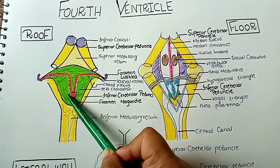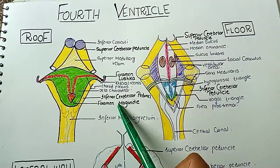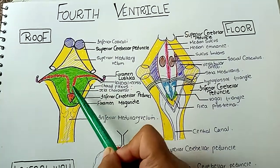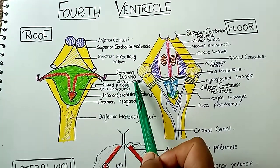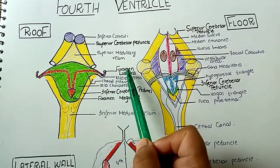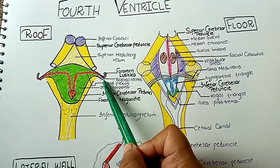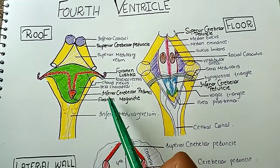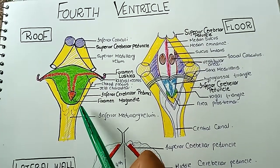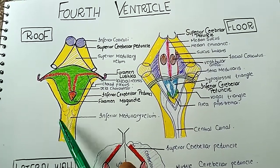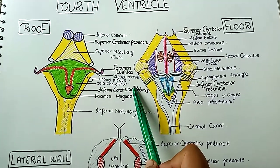The first is the median aperture, known as the foramen of Magendie, and the 2 lateral apertures known as the foramina of Luschka. The function common to both is to permit the transfer of CSF from the 4th ventricle to the subarachnoid space.